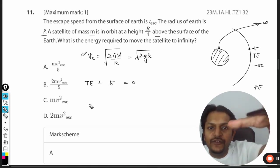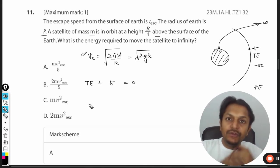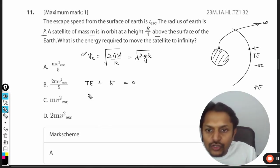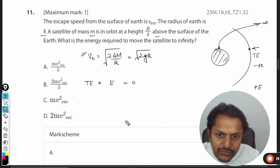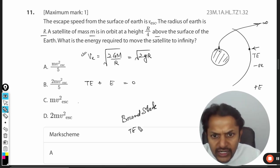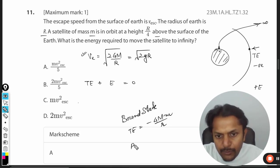First, understand the total energy of a satellite. There's something called the bound state. The total energy of the satellite is -GMm/2r, where r is the orbital radius. Potential energy is -GMm/r, and kinetic energy is +GMm/2r. This is the bound state.